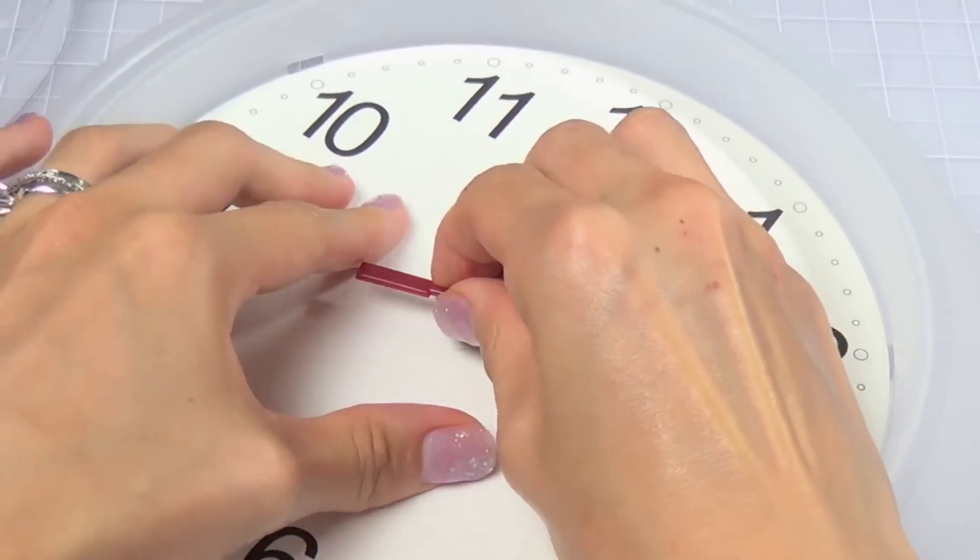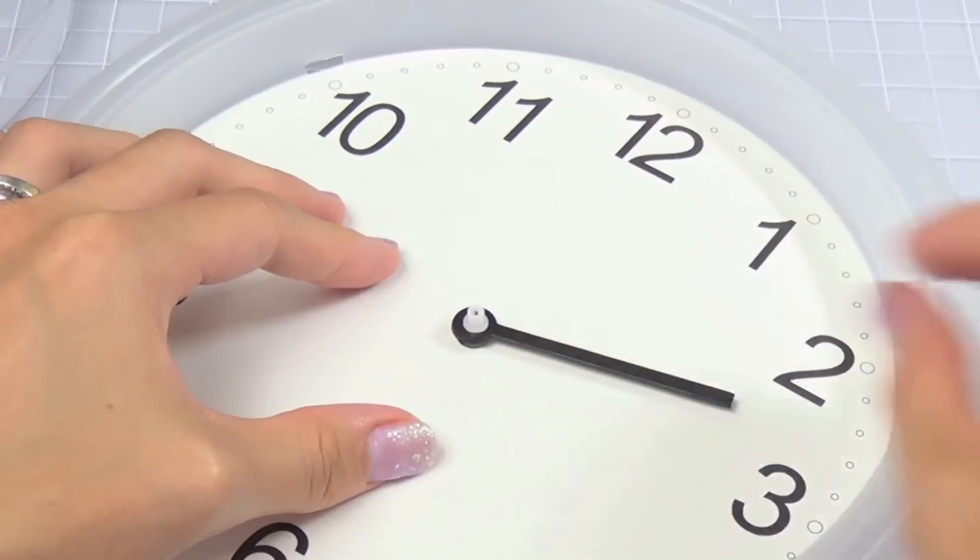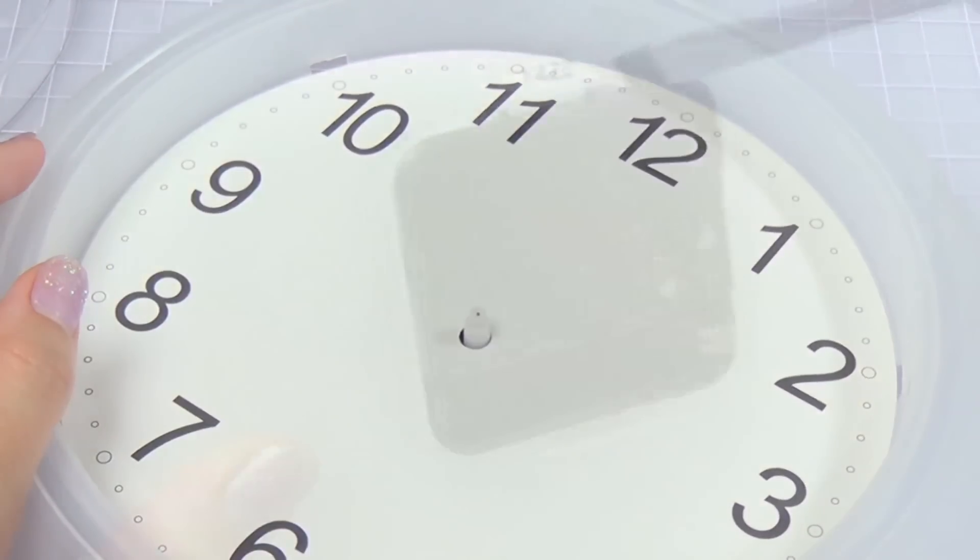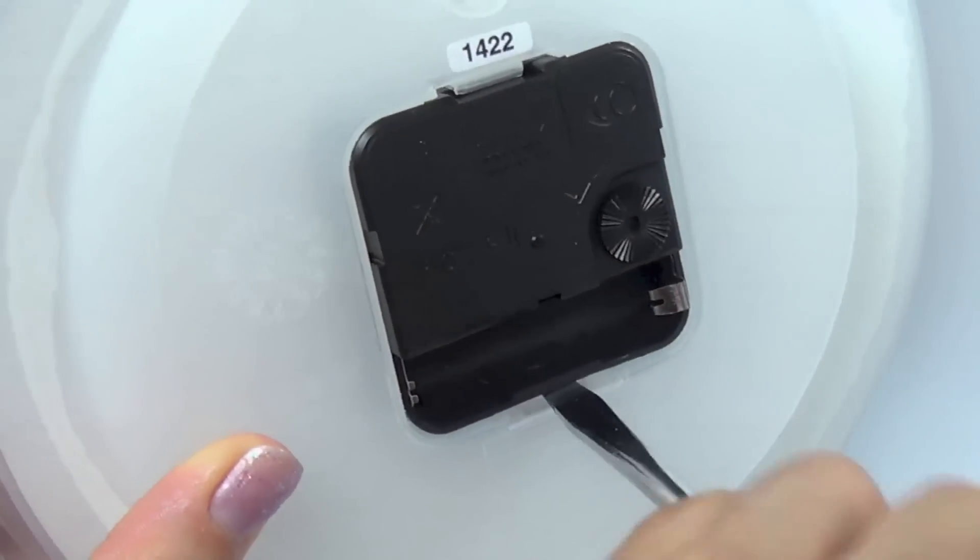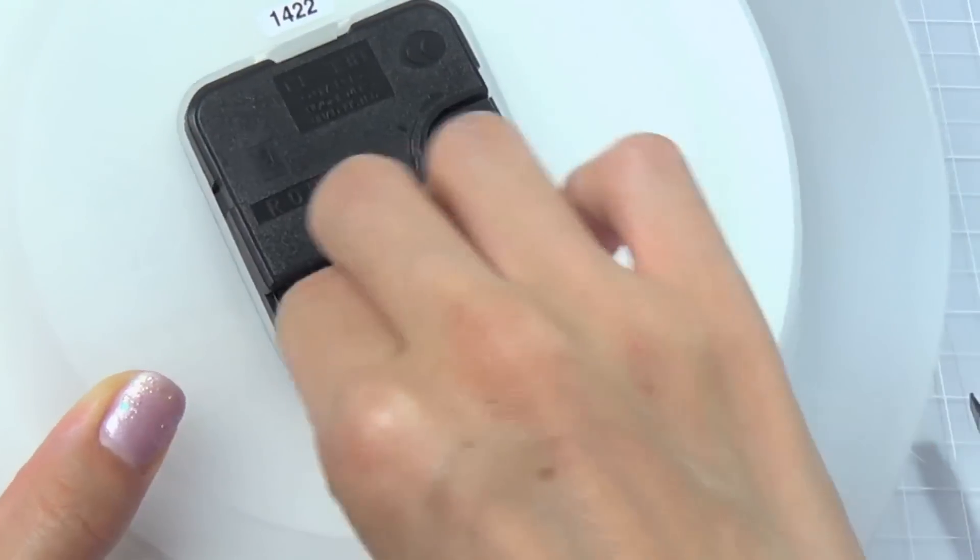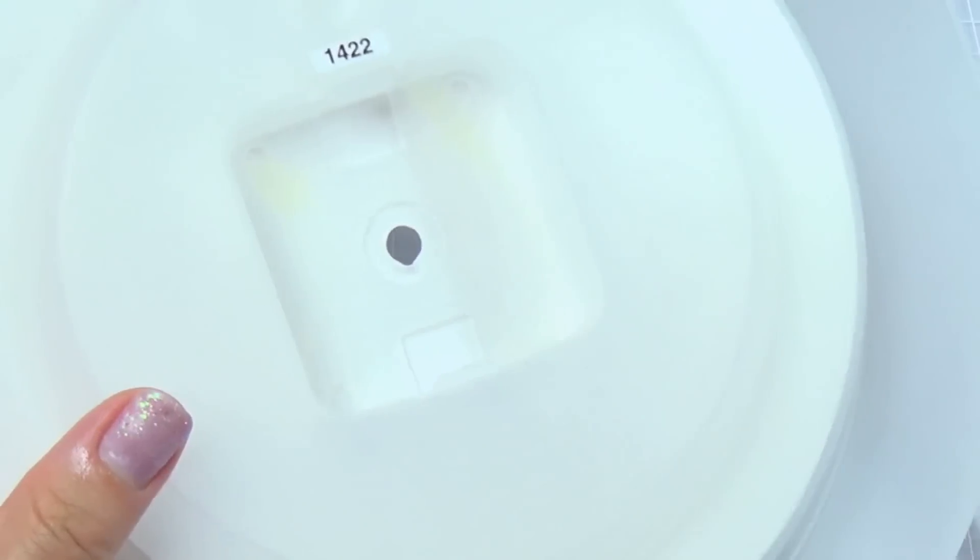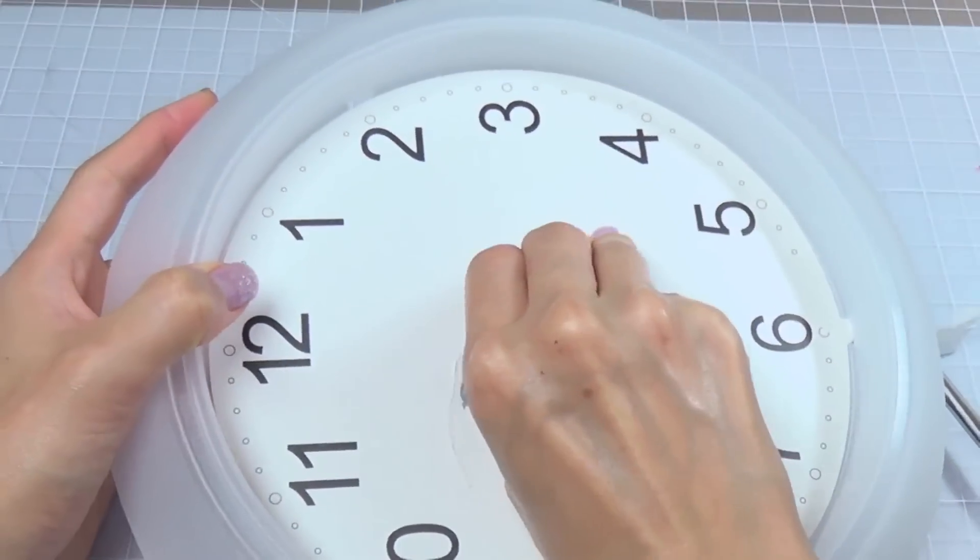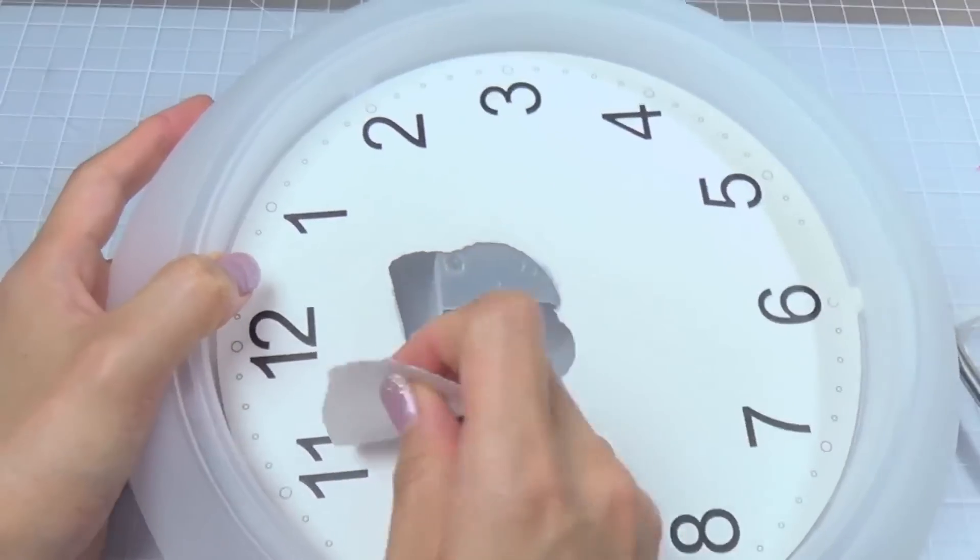Then carefully remove the hands. Remove the clock assembly in the back, again using the flat head screwdriver. And finally peel the clock face off.